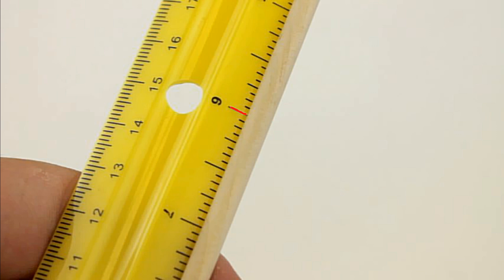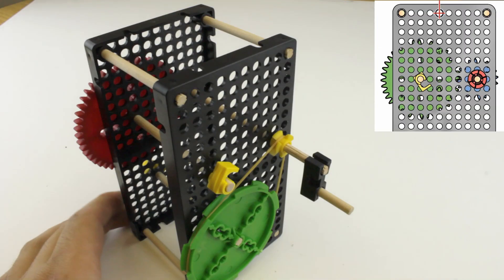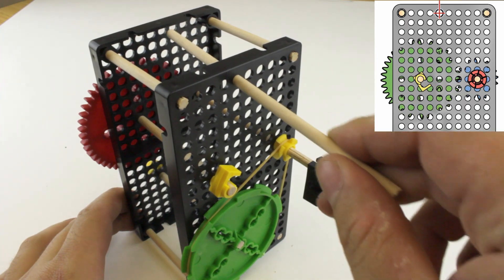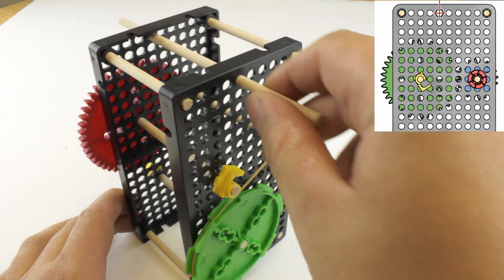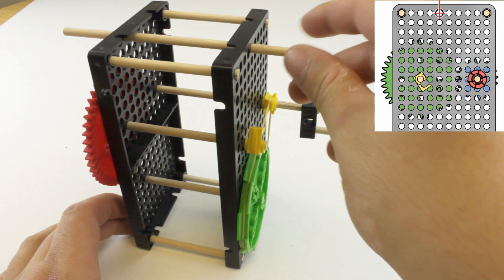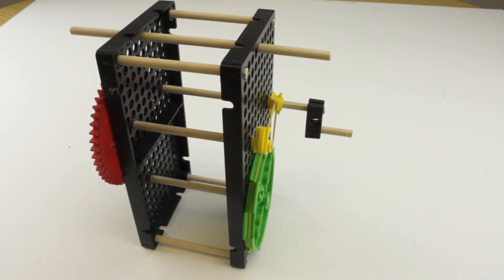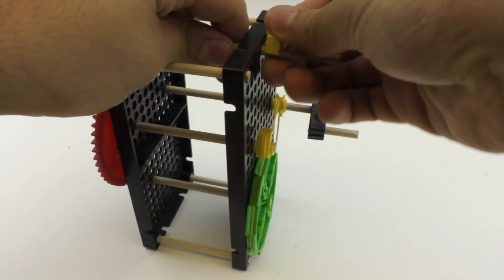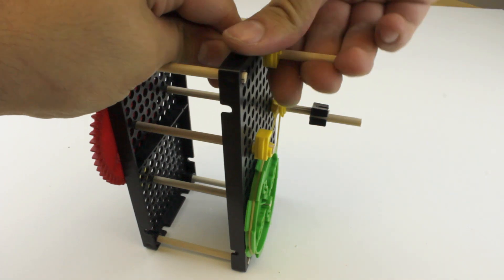Cut a dowel in half so that it's 150mm, which is about six inches. Place that dowel through the hole marked in the picture above. Add stop clips to both sides of the dowel, but make sure the dowel can still spin freely.